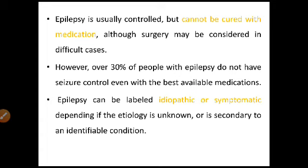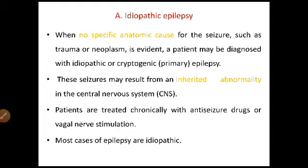Epilepsy can be labeled idiopathic or symptomatic. In idiopathic epilepsy, when no specific anatomic cause for the seizure — such as trauma or neoplasm — is evident, a patient may be diagnosed with idiopathic or cryptogenic epilepsy. It means the diagnostic tests found no physical or anatomical changes. Not because of any disease, infection, or injury — these things have not been found — even though the epilepsy is there. This is also called primary epilepsy.